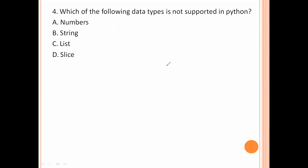Which of the following data types is not supported in Python? The data type not supported in Python is slice — option number D is the right answer. Number is supported, string is supported, object is supported, list is supported.